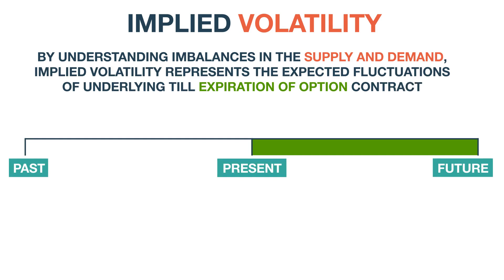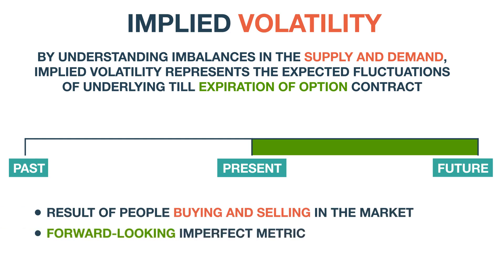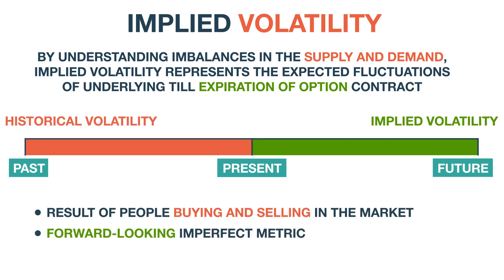Implied volatility is a result of people buying and selling in the market, and is a forward-looking imperfect metric. Historical volatility, in contrast, looks at a particular time frame in the past and measures the movement in that duration.